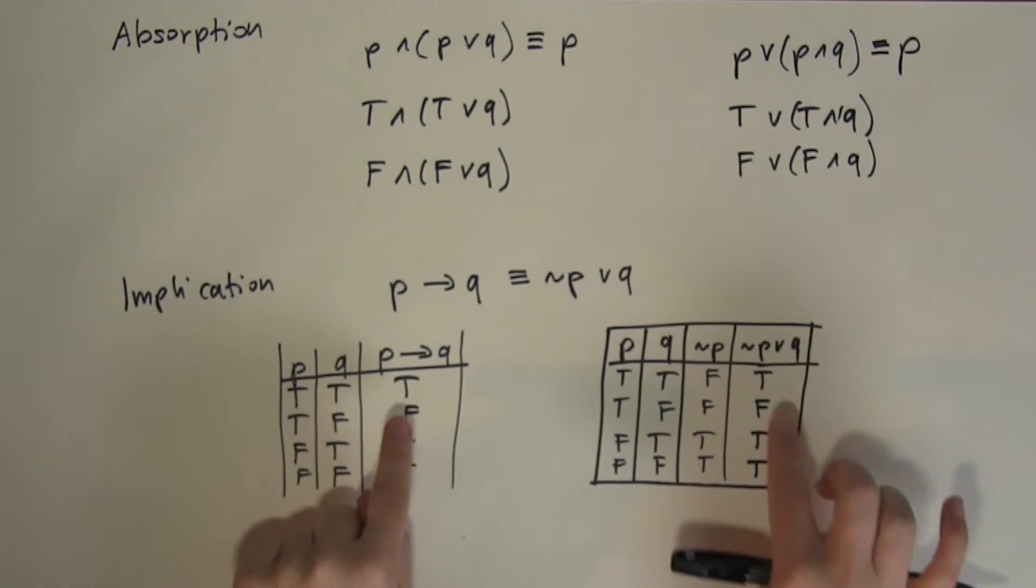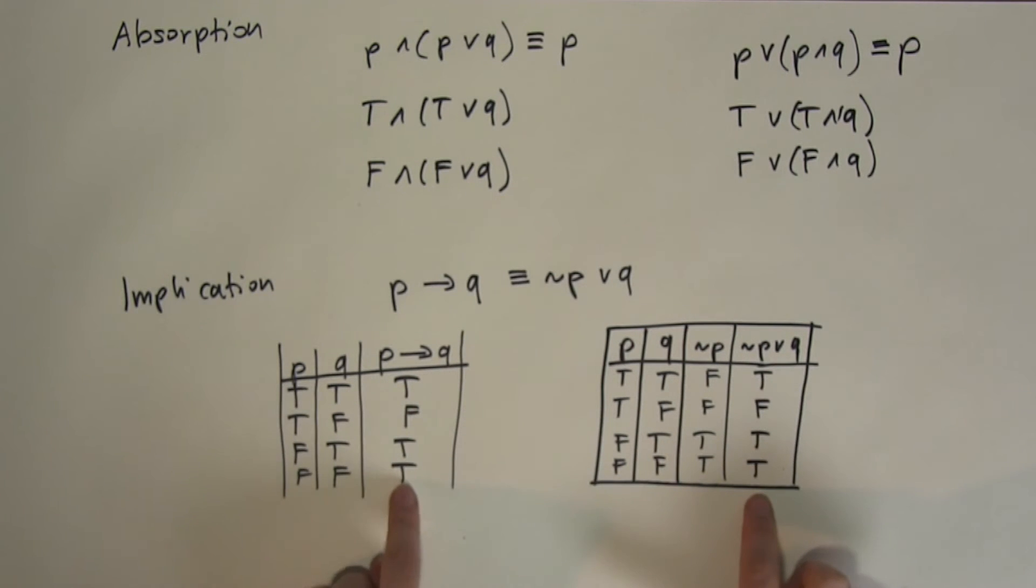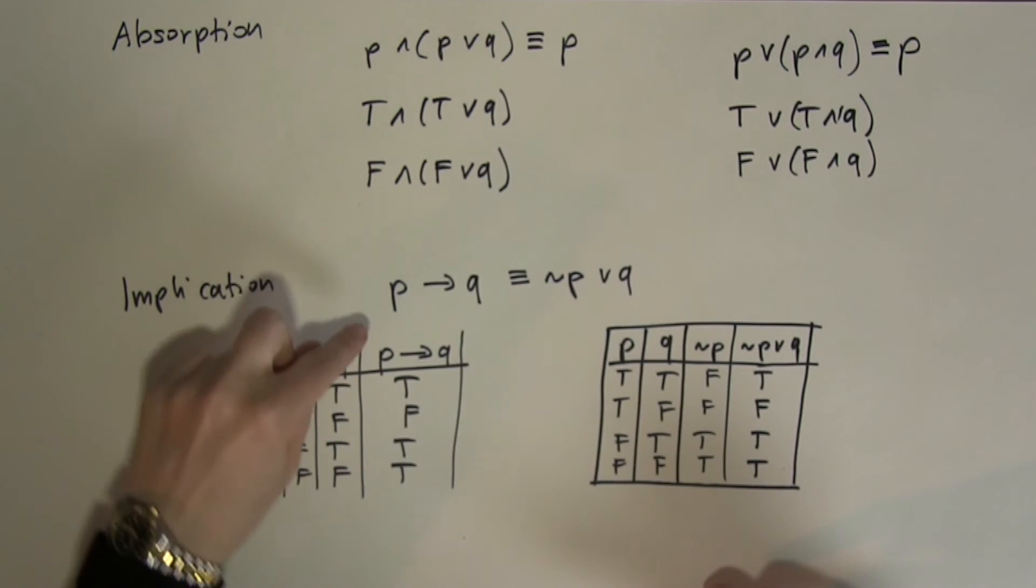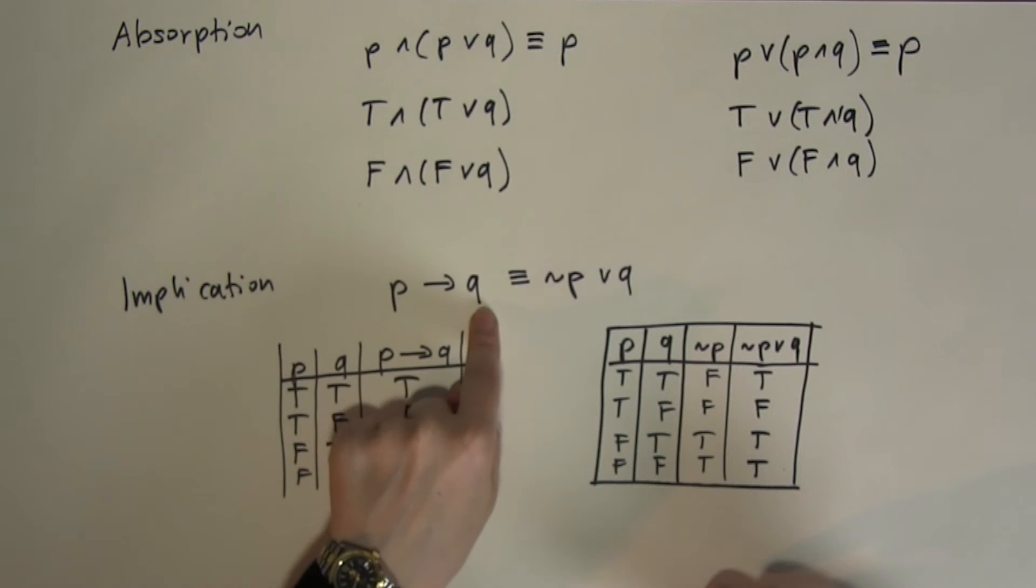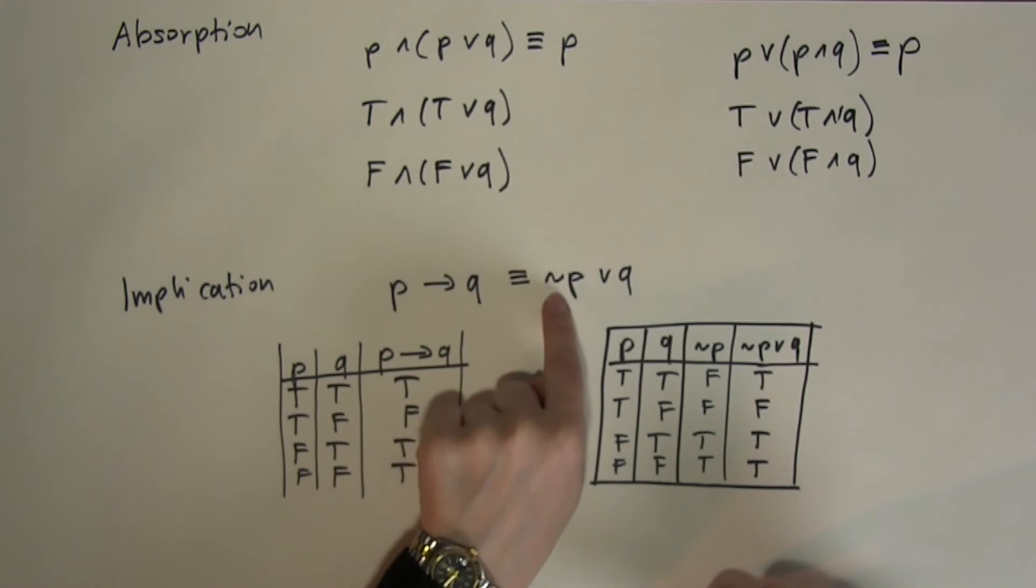So what I ended up with is the same output for both of the operations. So the implication law P implies Q or P if then Q is logically equivalent to not P or Q.